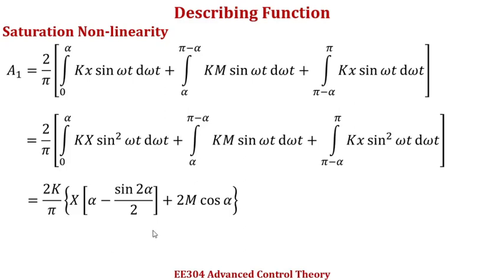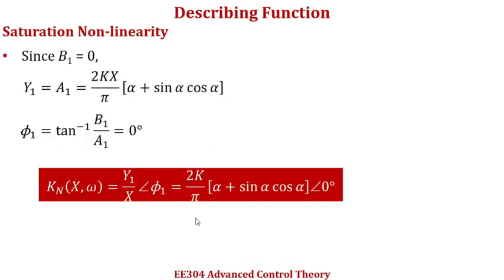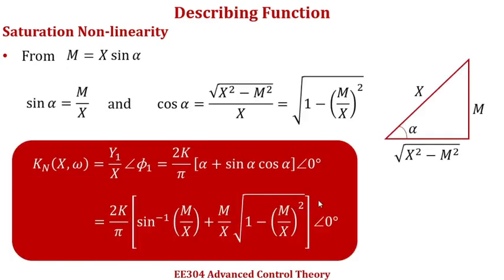The detailed derivation is given in the handout in the Google Classroom. A further modification is done by taking the relationship m equals x sin alpha, giving a simplified expression for a1. Moving on to the representation of the describing function given by y1 over x at angle phi1, we get an expression that can be further modified by bringing in capital M and x. Using a triangle and the relation m equals x sin alpha, we derive the value of cos alpha and then find kn. This is the describing function of saturation nonlinearity, which will be used to analyze the stability of a system with saturation nonlinearity.